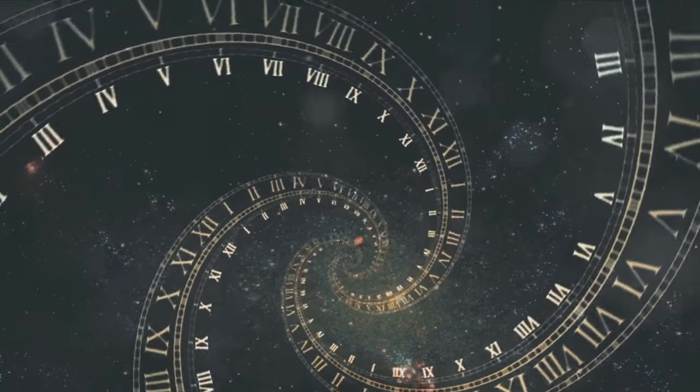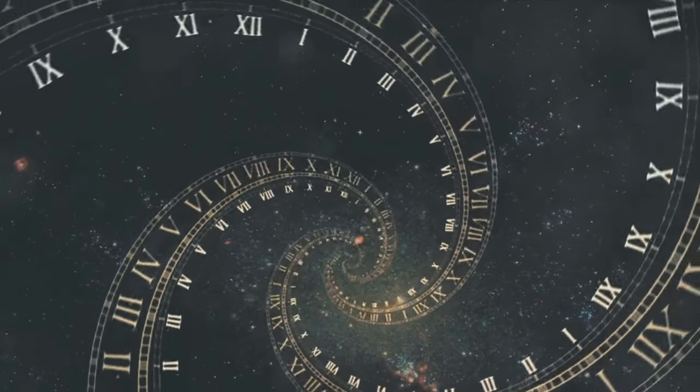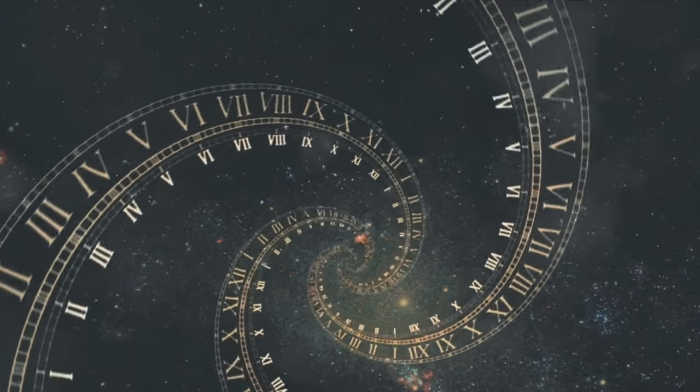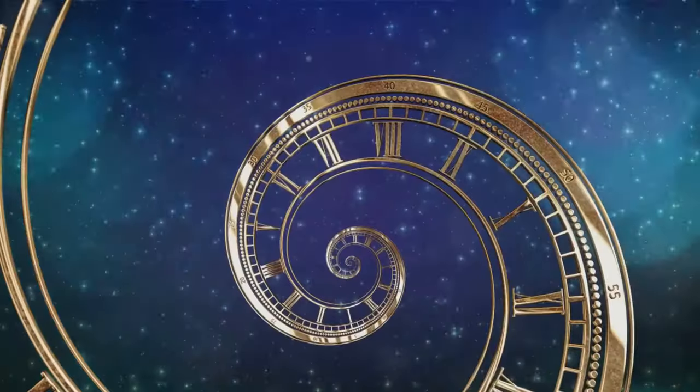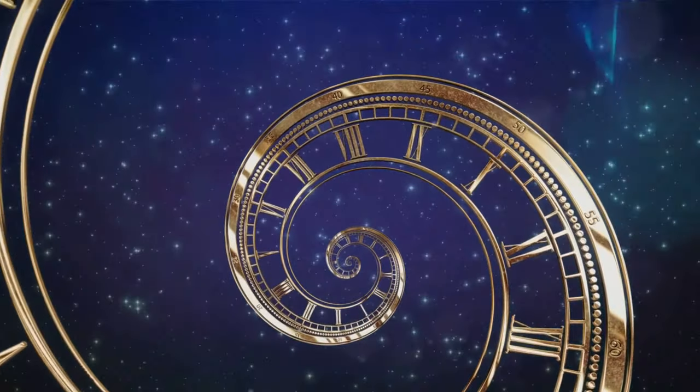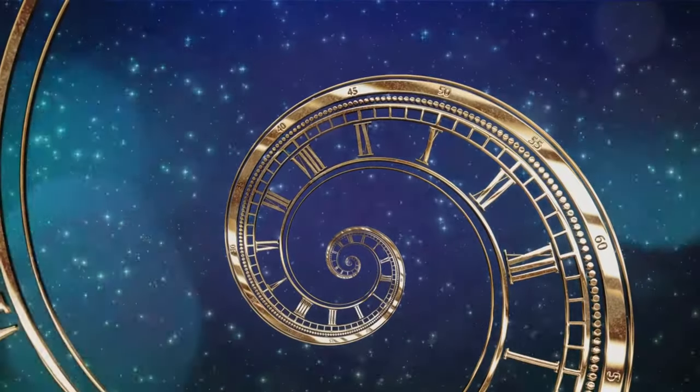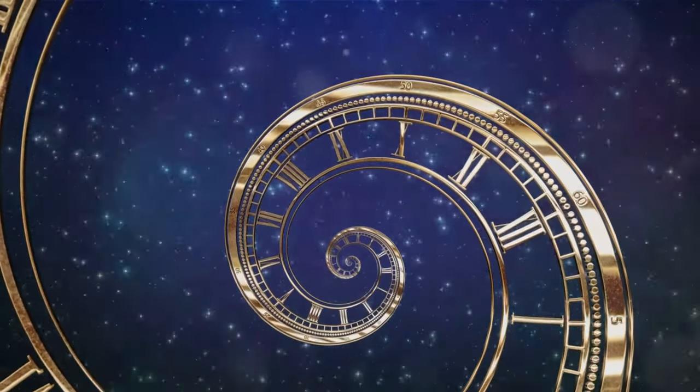Think of a stretched rubber sheet. If you were to place a heavy ball in the center, the sheet would sag around the ball. That's analogous to how spacetime bends around mass. Now, imagine a smaller ball rolling around the edge of the sag. It would spiral inwards towards the heavier ball. That's the effect gravity has on objects in spacetime.